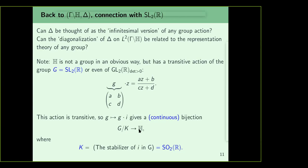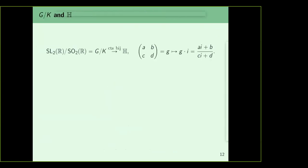So you can identify the upper half plane with SL2(R) mod SO2(R). You can verify that this bijection is continuous — and in fact a homeomorphism and diffeomorphism. G mod K, which is SL2(R) mod SO2(R), is in continuous bijection with H under the orbit map sending g to g·i = (ai+b)/(ci+d). You will need to remember this.